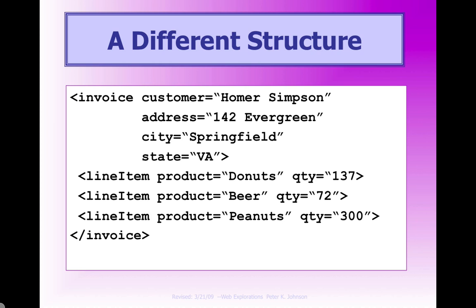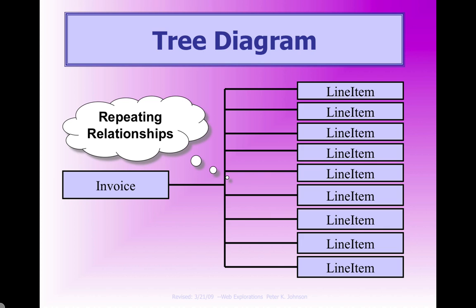Then we built a line item for each of the items that we have. So we have a line item for donuts, a line item for beer, and a line item for peanuts. And you can see that by doing this line item node, we can add multiple line items for our customer Homer Simpson. We also have our quantity taken care of in the line items. Now here's a diagram of the new relationships — we have our invoice, and then it repeats with the multiple line items. There are two different schools of thought on how to arrange your XML data. This works very well because of the repeating data. If the data is repeating like an invoice item, this is a really good way to do it as opposed to the first method.